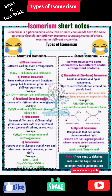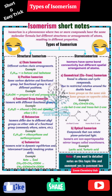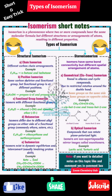Stereoisomerism refers to isomers that have the same bond connectivity but different spatial arrangement of atoms. Stereoisomerism consists of geometrical isomerism, also called cis-trans isomerism, which is found in alkene and cyclic compounds.